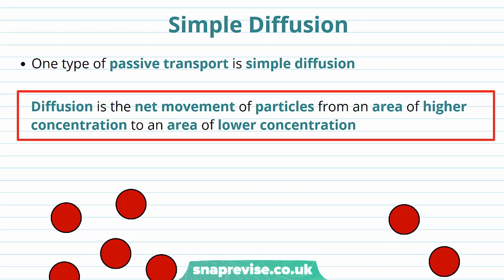So simple diffusion is a method of transport and an example of passive transport. Diffusion is the net movement of particles from an area of higher concentration, where there are more of them, to an area of lower concentration. So it's really important that you nail this definition. It's a net movement, which means an overall movement, of the particles from an area where there's lots of them to an area where there's less of them.